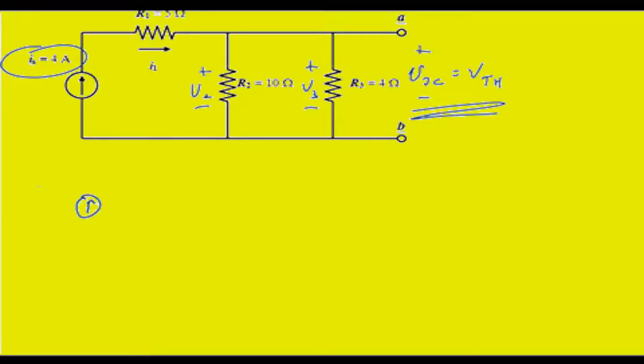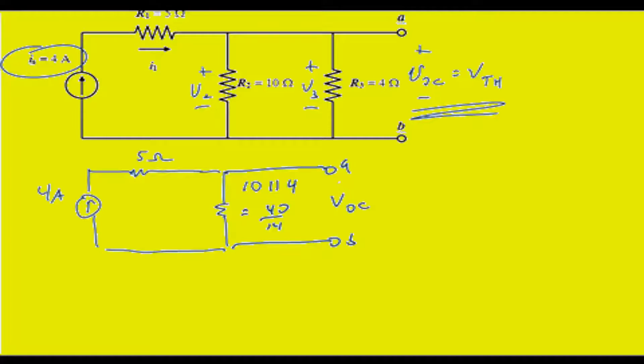So I'm going to redraw my circuit with a 4 amp source, have the 5 ohm resistor still, and then we have a 10 ohm resistor in parallel with a 4, which is equal to 40/14, which I'll just leave in that form for now. And the voltage across the 40/14th resistor is equal to VOC, which is equal to 4 amps times 40/14th ohms, or 11.43 volts, and that's the Thevenin.